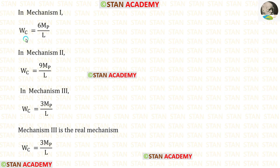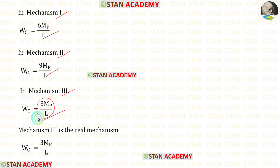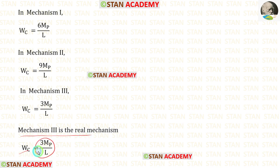We have found the collapse load Wc three times: in mechanism 1 (6·MB/L), mechanism 2 (9·MB/L), and mechanism 3 (3·MB/L). We have to select the minimum value. Out of these three, 3·MB/L is the minimum value. So mechanism 3 is the real mechanism and the collapse load is 3·MB/L. Thank you for watching this video.